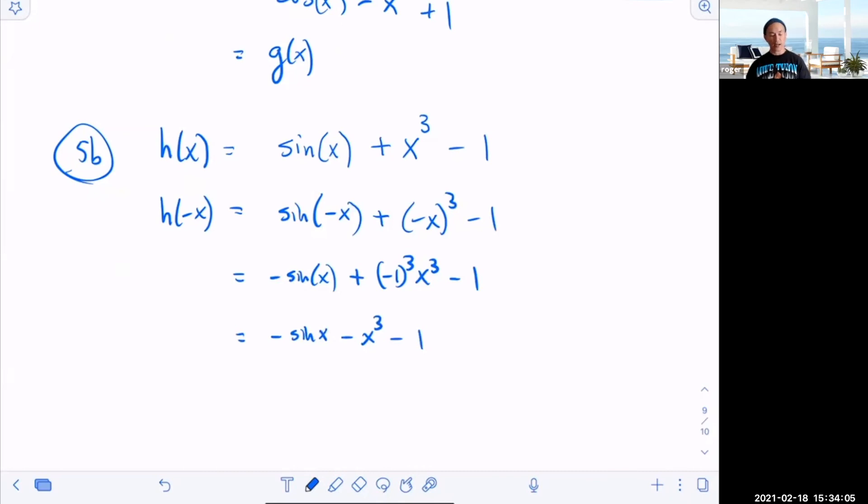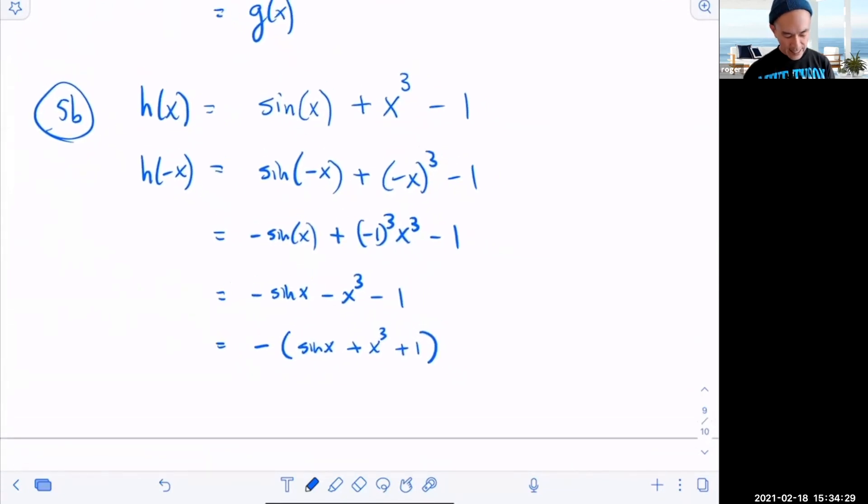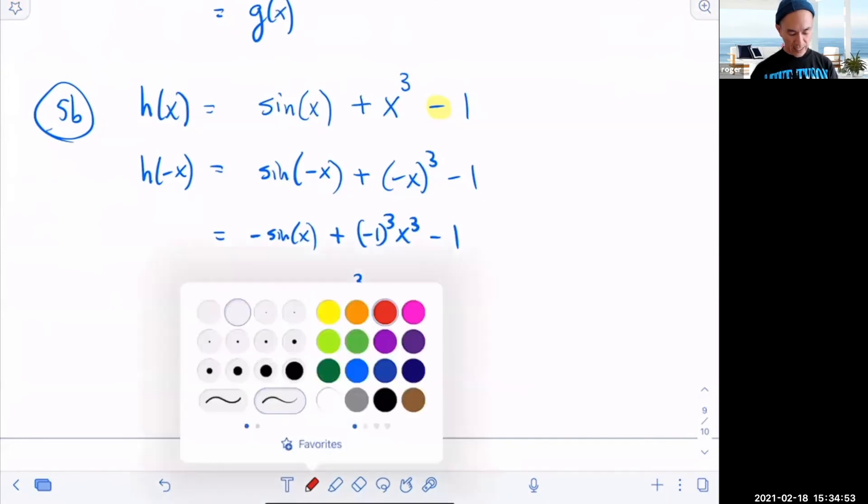So if this was odd, then I can factor out a negative one and get the same as h of x. So let me factor out a negative one. I'm going to get sine of x plus x cubed plus one. Now when you look at this guy, is this the same as my original function h of x? It is not, because it differs by a sign right here. So this is not h of x. So in this particular case, this guy is neither.